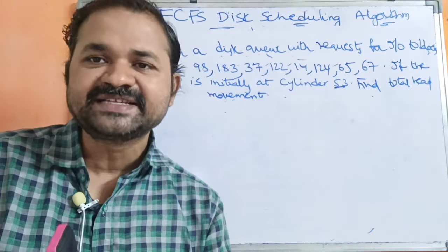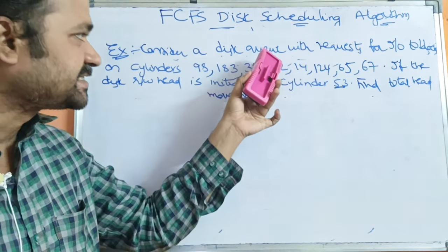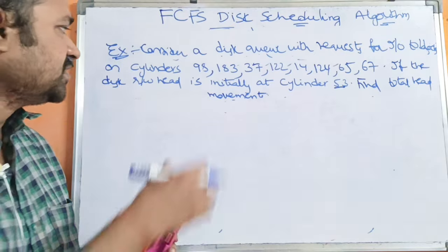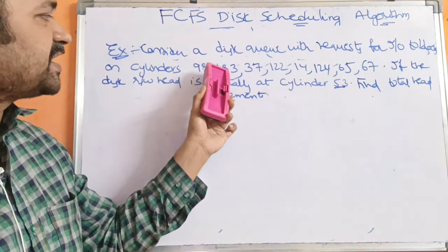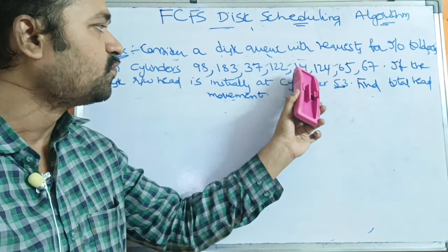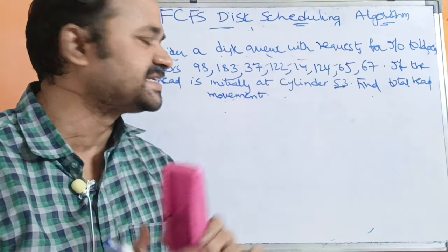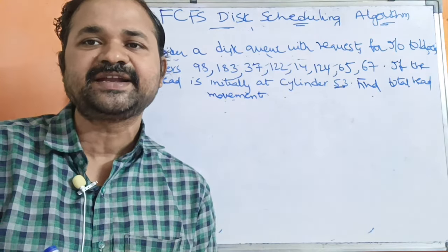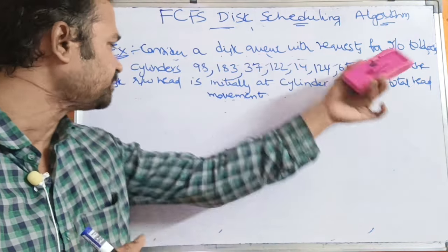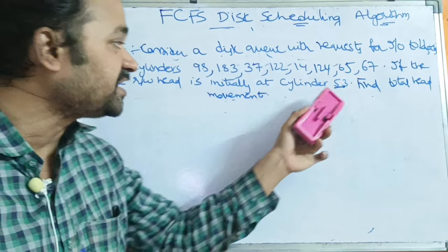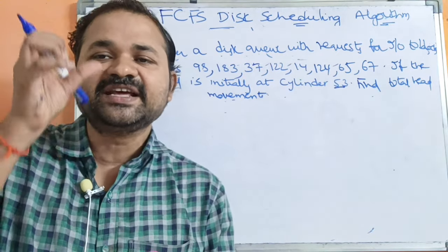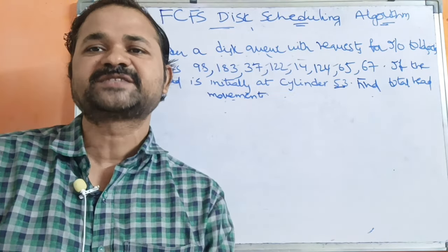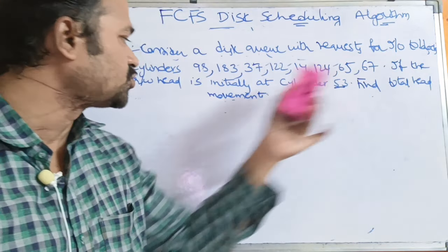Here, totally 200 cylinders are given. Consider a disk queue with requests for I/O blocks on the cylinders: 98, 183, 37, 122, 14, 124, 65, 67. These cylinders contain data. Our target is to access the cylinders in this order. The disk read-write head is initially at cylinder 53, and from cylinder 53 we have to move to each desired cylinder. We need to find the total head movements.